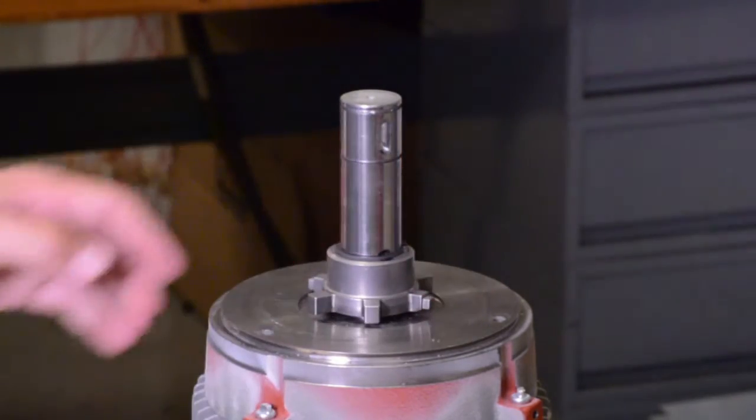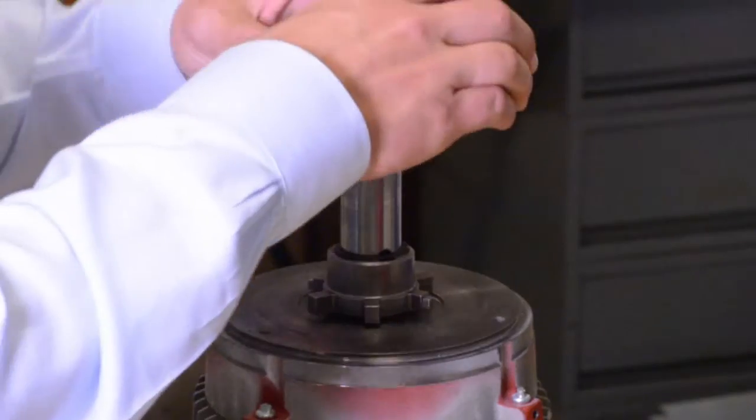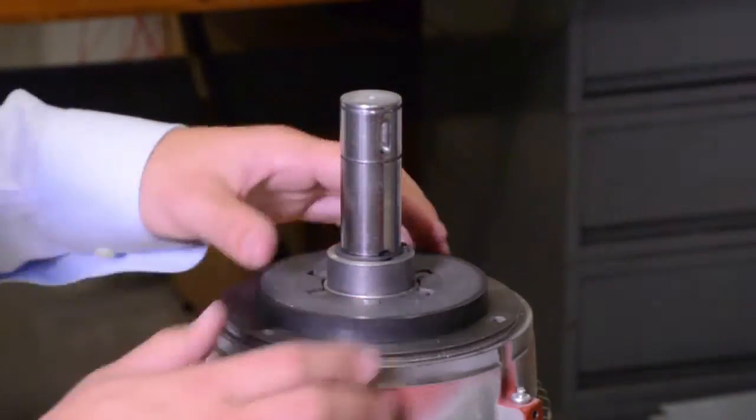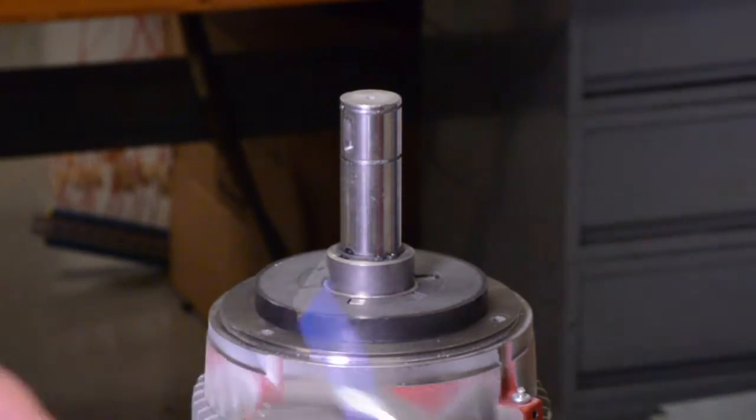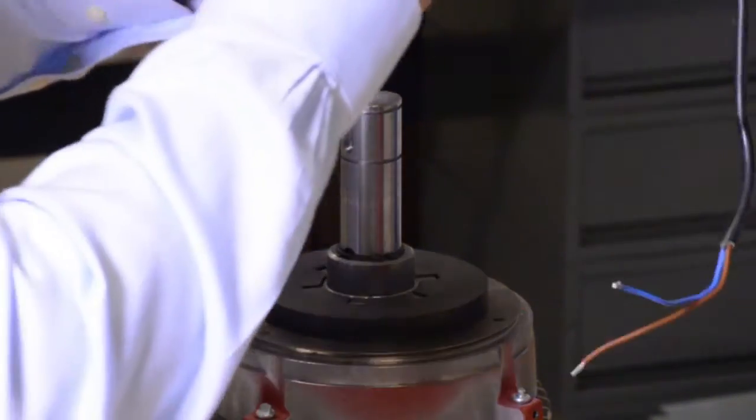Next, slide the friction lining on the hub and align the fingered connections. Then, take the assembled magnetic system and slide it over your friction lining and hub, lining up your bolts.